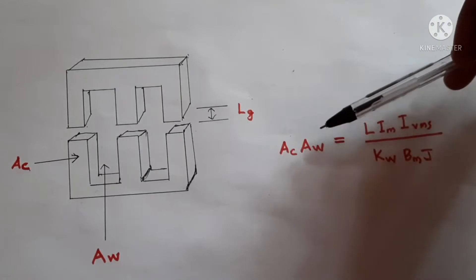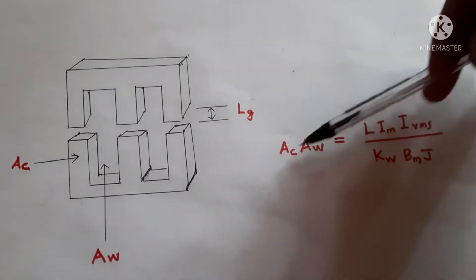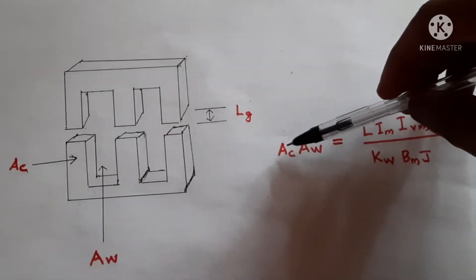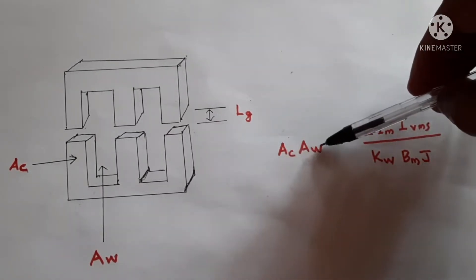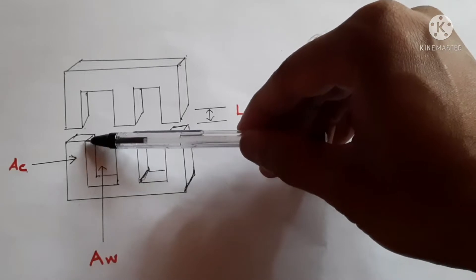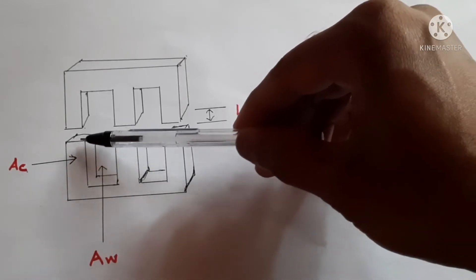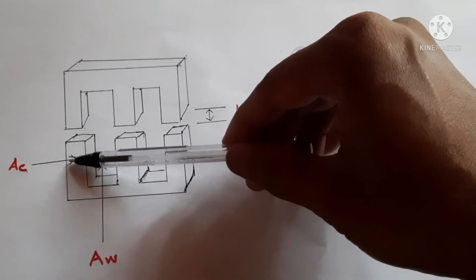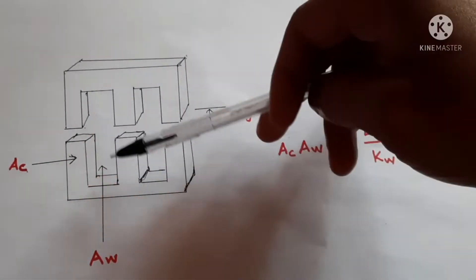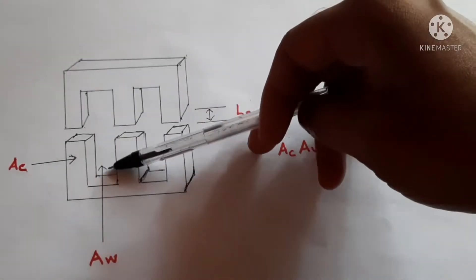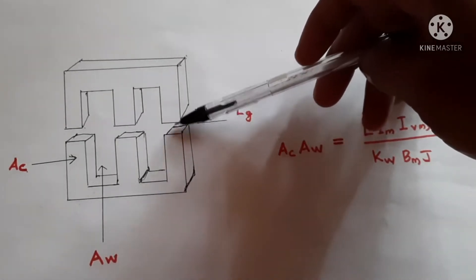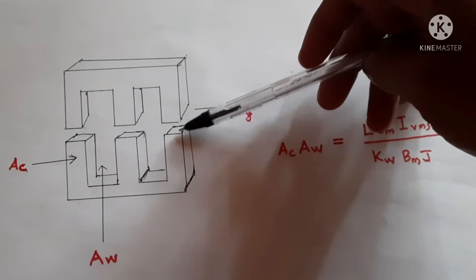The area of the core is determined using this equation. Before giving explanation to this equation, we have to know what AC and AW are. AC means the core area — this is the width and this is the breadth; if we multiply these, we will get the core area. AW is the area where we coil the wire. LG is the gap — a small gap put between the two cores.